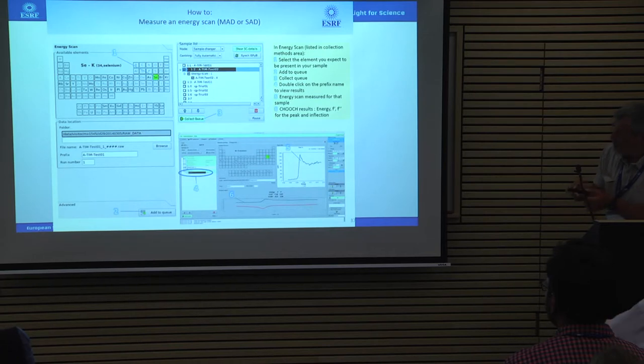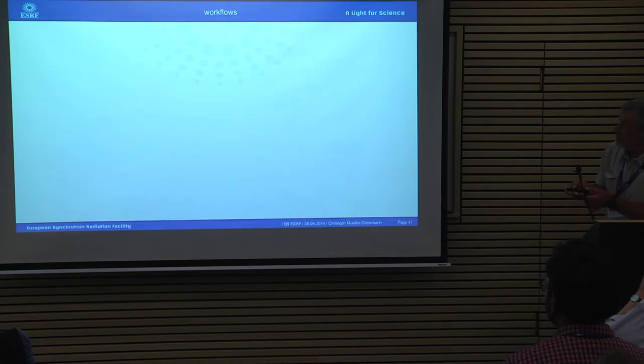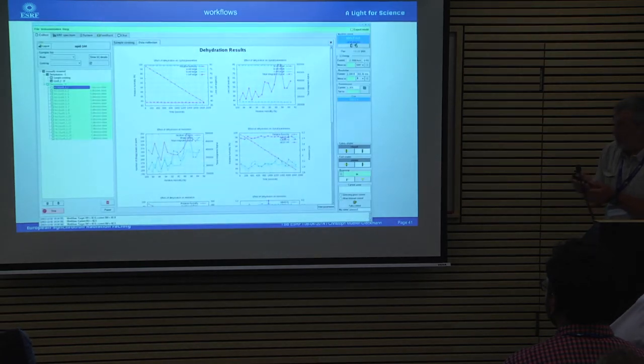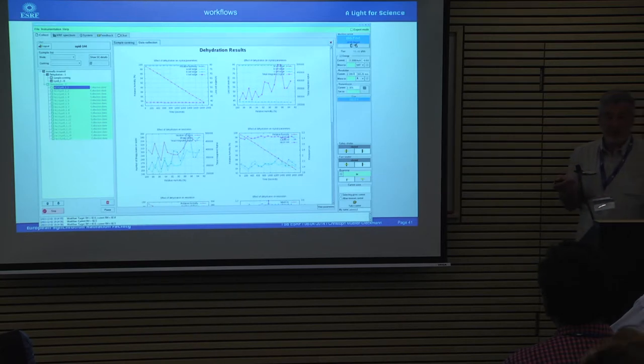Additionally, most of our beamlines are equipped with a kappa goniometer, allowing us to change the orientation of the crystal. With very large cell parameters it's important to properly orient the crystal. We can do this reorientation using X-ray diffraction images or visually. Also, we can collect data at room temperature using a device called a humidifier, which controls humidity during data collection. There is a workflow where humidity is changed and the program automatically looks for improvement in diffraction — this works not very often, but if you have large cell parameters, it's worth trying.